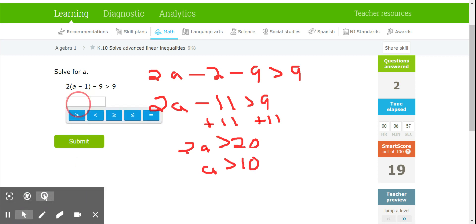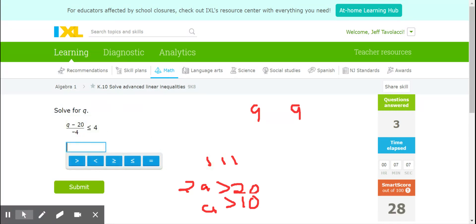A is greater than 10. Notice we divided by a positive, so nothing had to flip. So everything stays the same.